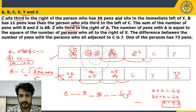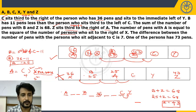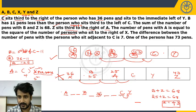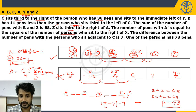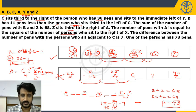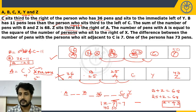Next clue: the difference between the pens of persons sitting adjacent to C is 7. Adjacent to C are G and Y. G = 43 pens. So Y is either 43 + 7 = 50 or 43 − 7 = 36. Since 36 is already assigned to X, Y must be 50 pens. The last remaining person, C, has 73 pens. Final arrangement: X=36, A=16, B=25, G=43, C=73, Y=50.